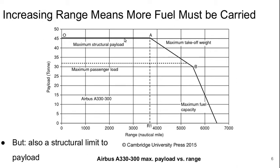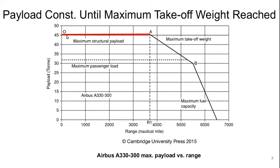If we want to increase range, we need to carry more fuel. But that doesn't necessarily mean changing anything about the payload, because there's a structural limit to payload. This could be in terms of structural weight, but more likely it's in terms of volume — there's only so much room for stuff in the airplane. So on this first section of the curve, from O to A, the payload is constant because the maximum takeoff weight is increasing as we carry more and more fuel to increase range. This happens until we hit the maximum takeoff weight.